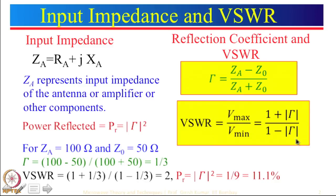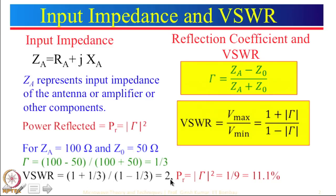From here we can calculate the value of VSWR. Looking at limiting cases: if reflection coefficient gamma is 0, VSWR will be equal to 1, and if the magnitude of reflection coefficient is 1 then 1 plus 1 is 2 but 1 minus 1 is 0, so that goes to infinity. So VSWR can vary from 1 to infinity. For our case with reflection coefficient 1 by 3, we substitute: 1 plus 1/3 divided by 1 minus 1/3, which is 4/3 divided by 2/3, which comes out to be 2. So for reflection coefficient 1 by 3, VSWR comes out to be 2.